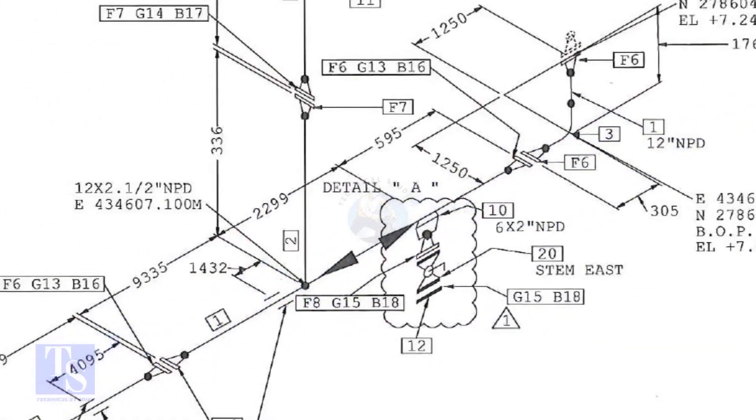The center of the weld-olet is 595mm away from the face of the flange. Now, we are going to mark this distance on a pipe with a flange fitted on it.